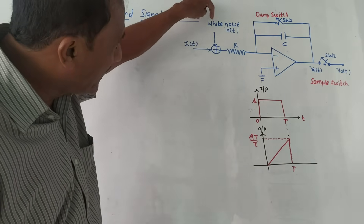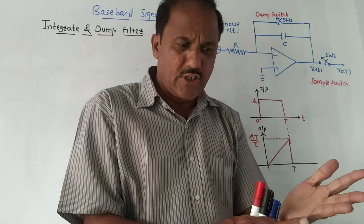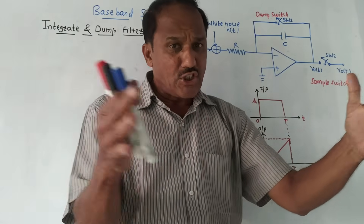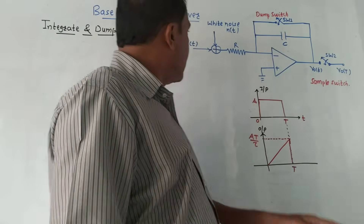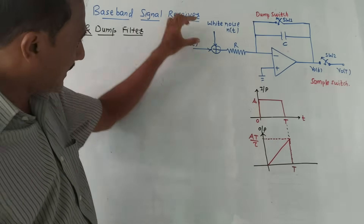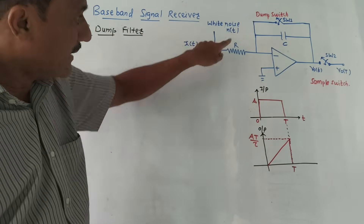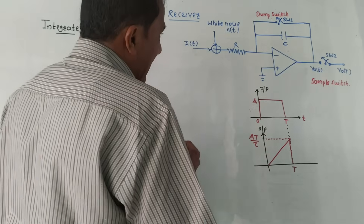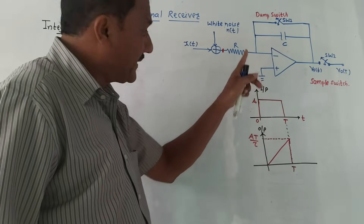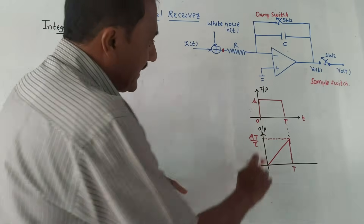The received data is getting added with white noise. This is from unit two — in unit one we discussed the concept of white noise. There are different types of noise, and the combination of all noise is white noise. Such a signal — the data added with white noise — is applied at the input of the integrator circuit, which is an RC integrator.